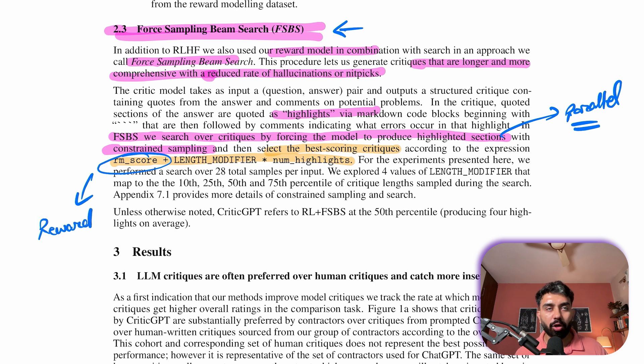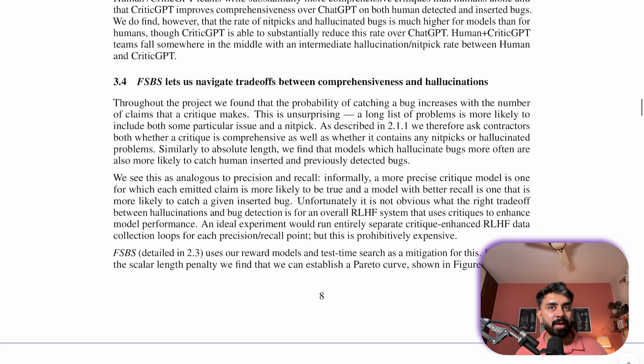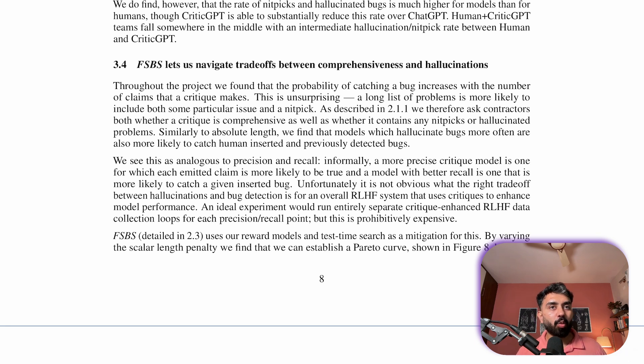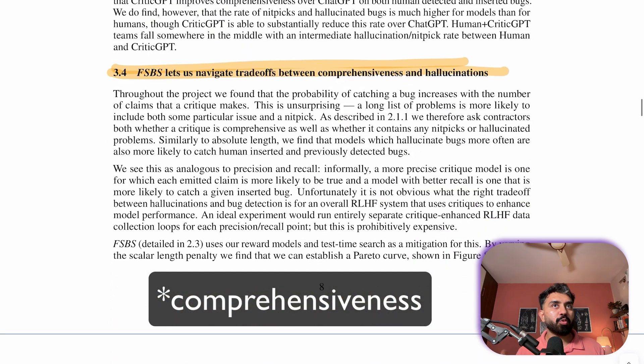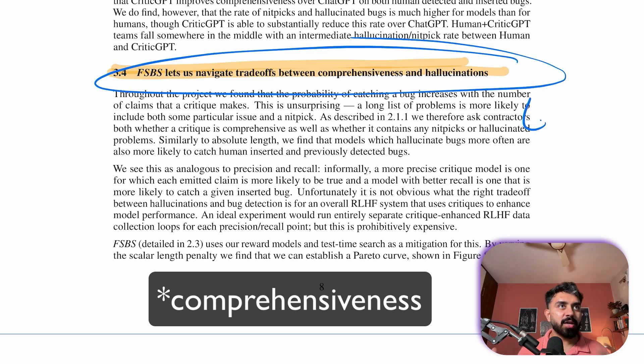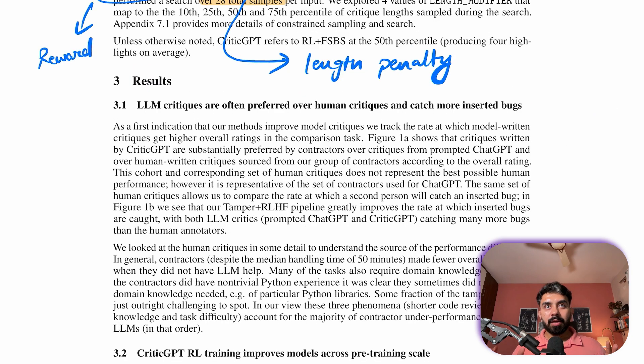This is basically just a scoring function that balances two objectives. One is your RM score, the RM score is the reward model which indicates how well the critique points out bugs or issues. And then the second parameter is length modifier multiplied with number of highlights. So this is a length penalty that discourages the model from generating overly long critiques with excessive hallucinations or nitpicks. So this FSBS model then basically provides a balance or manages the trade-off with the hallucinations and nitpicks, and this was a new method, a new approach that they have introduced in this paper.